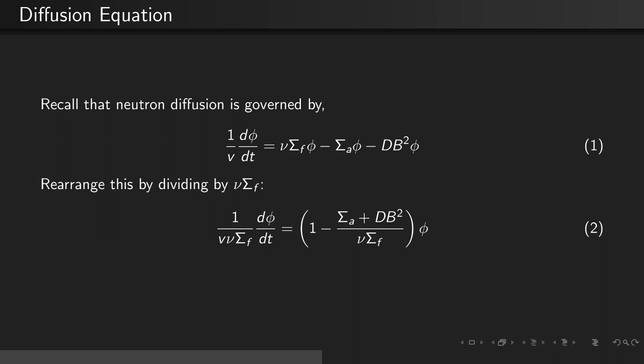Let's rearrange the diffusion equation by dividing by nu sigma F. When we do this, we get 1 over the velocity times nu times the fission cross-section times d phi dt. This is equal to 1 minus the absorption cross-section plus the diffusion coefficient times the buckling squared divided by nu sigma F, all multiplied by phi.